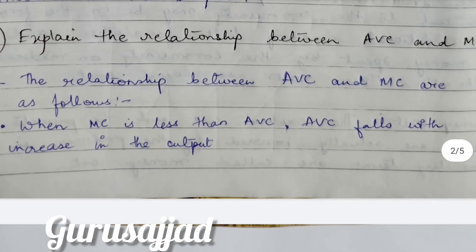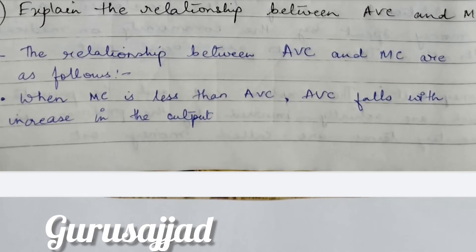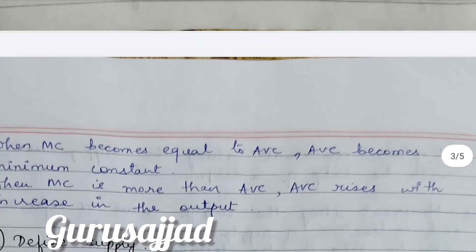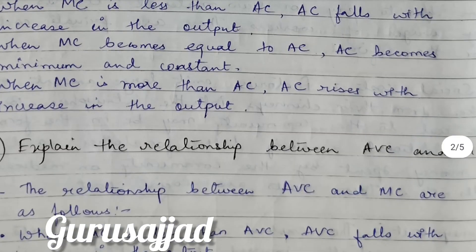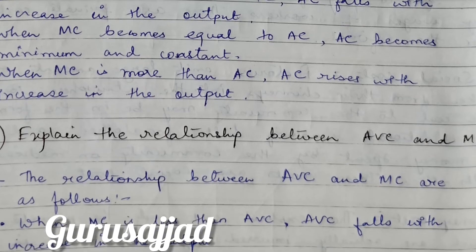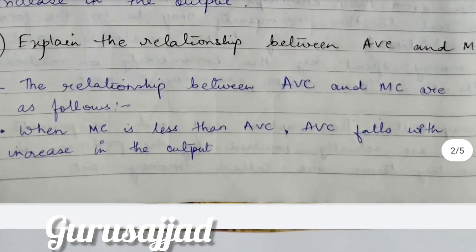Next question: Explain the relationship between average variable cost (AVC) and marginal cost (MC). The relationship is largely the same as with average cost. The relationship between AVC and MC is as follows: (1) When MC is less than AVC, AVC falls with increase in output. (2) When MC becomes equal to AVC, AVC becomes minimum and constant. (3) When MC is more than AVC, AVC rises with increase in output. Students, if you are asked about AC and MC or AVC and MC in the exam, do not get confused — you can easily include these points.